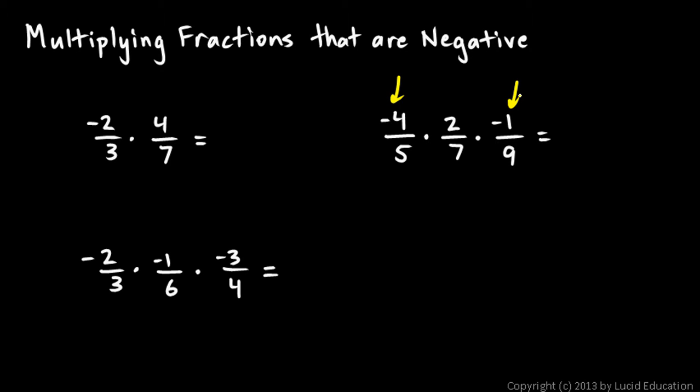See, this one has two negative numbers, and down here all three of the fractions are negative. And again, we're multiplying. These are all multiplied together.